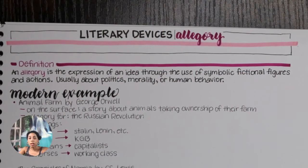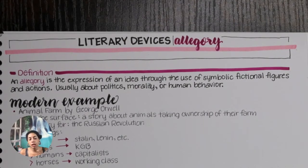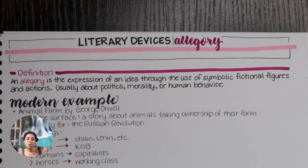So let's start off with the definition of allegory. I have my notes here so I'm going to spotlight those and we're going to start going over some different things. Basically an allegory is an expression of an idea through the use of symbolic figures and actions, and it's usually about politics or morality or human behavior.